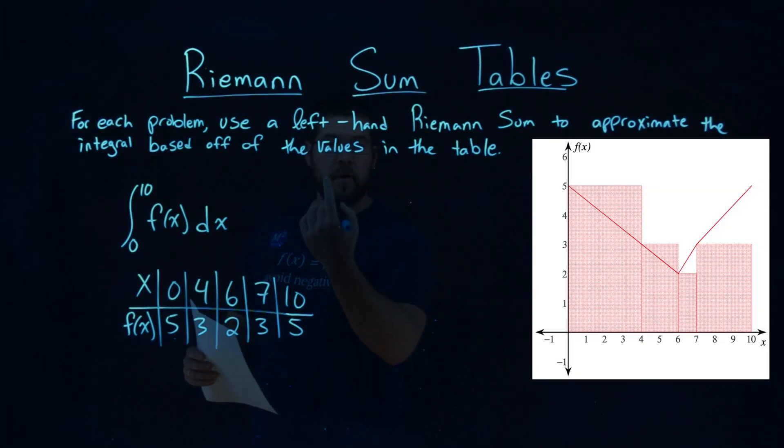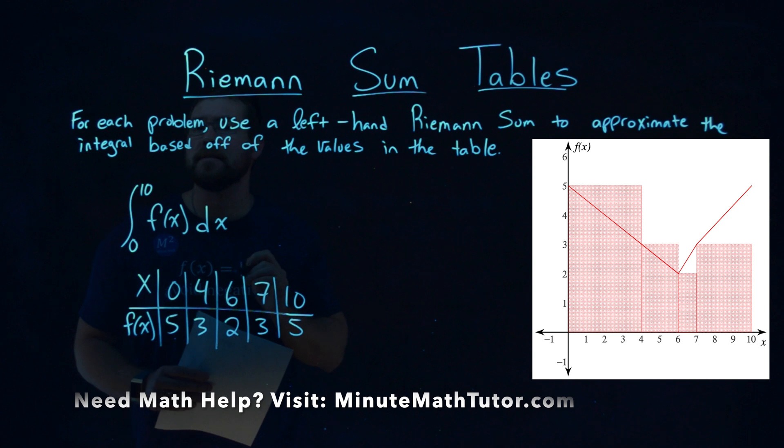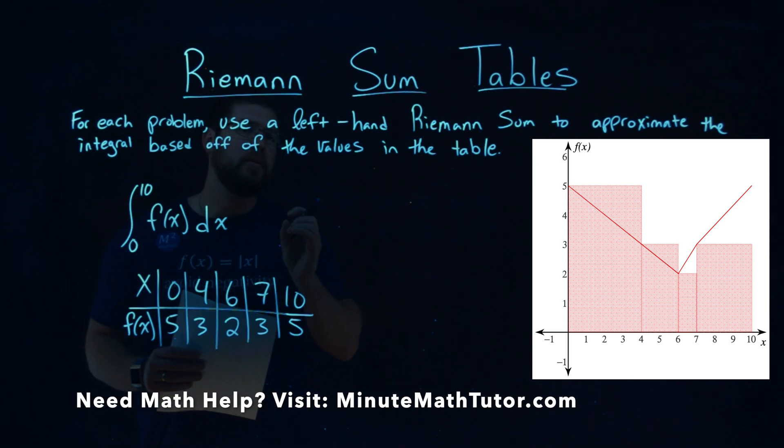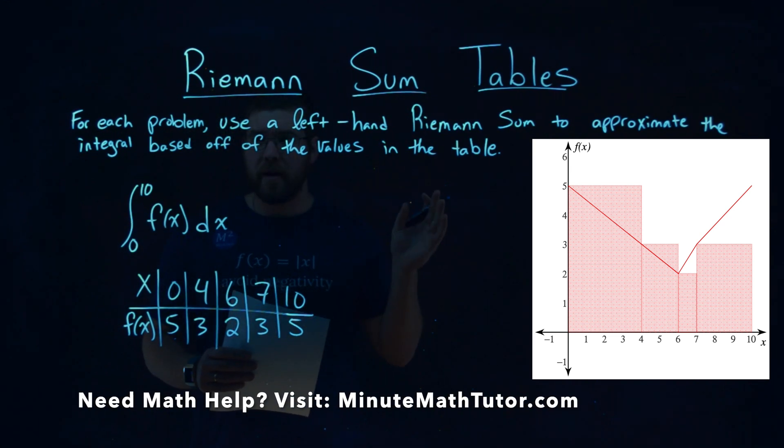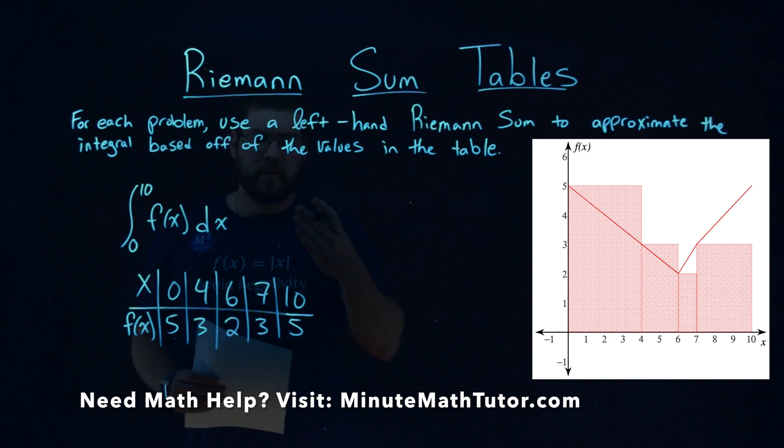We're given this problem right here, the integral from 0 to 10 of f(x) dx, and we wanted to use the left-hand Riemann Sum to approximate this integral based on the values in our table below.